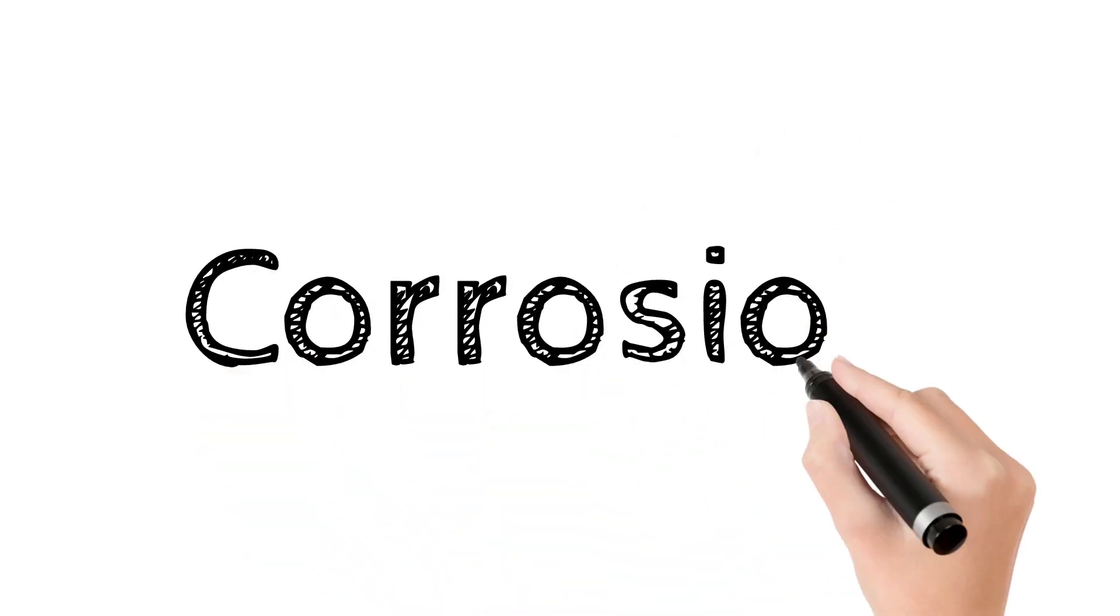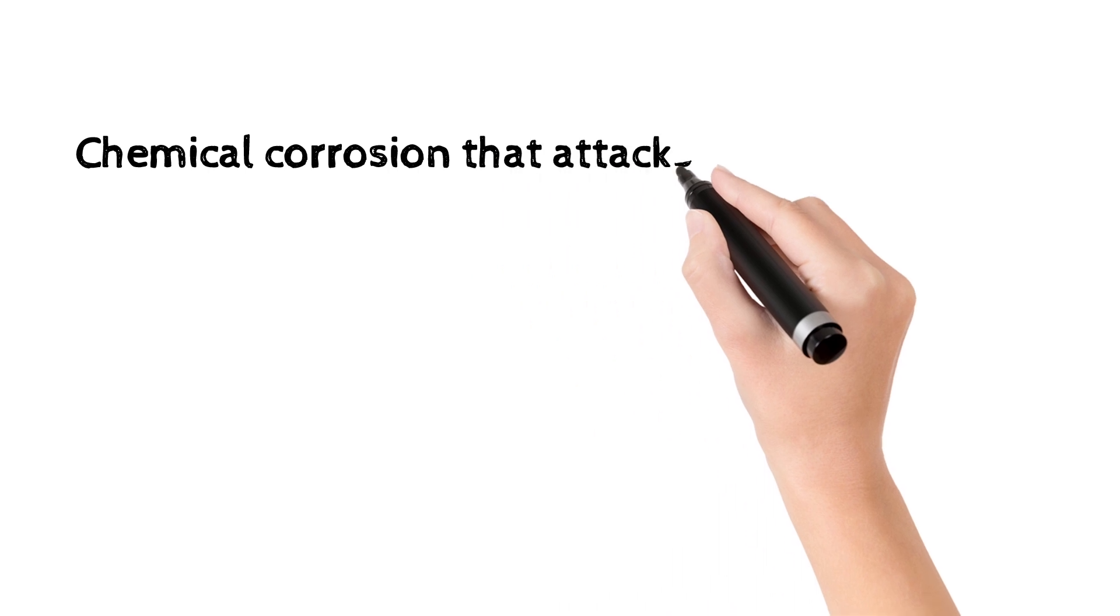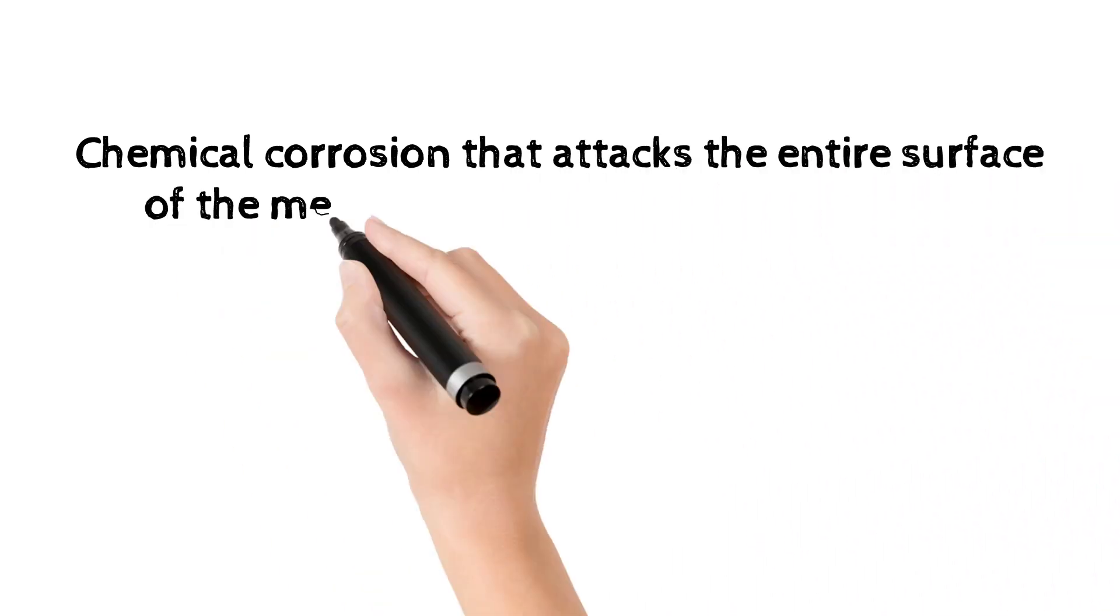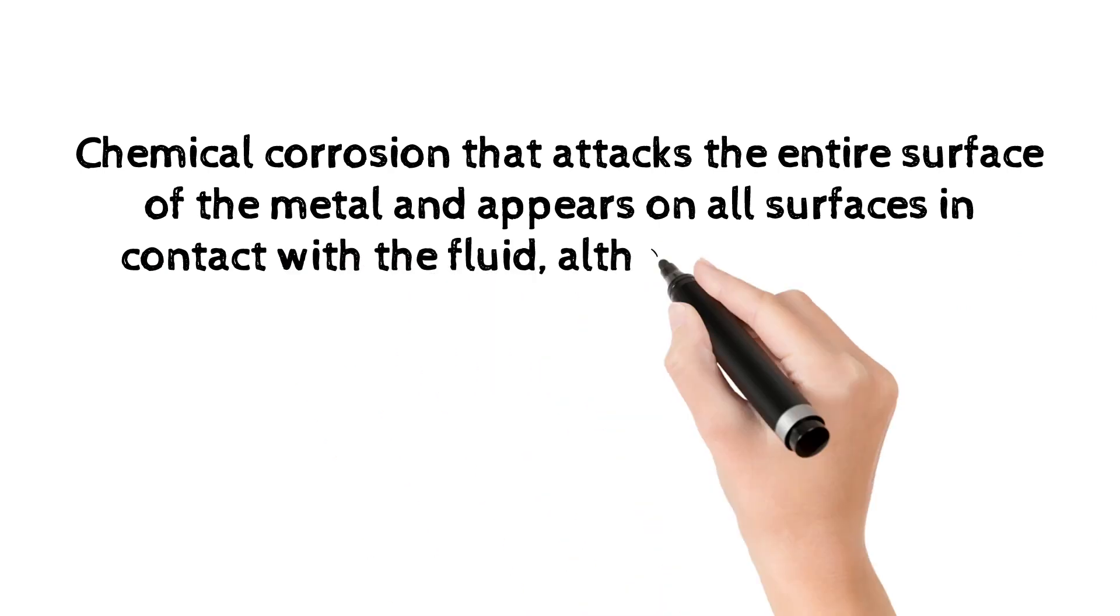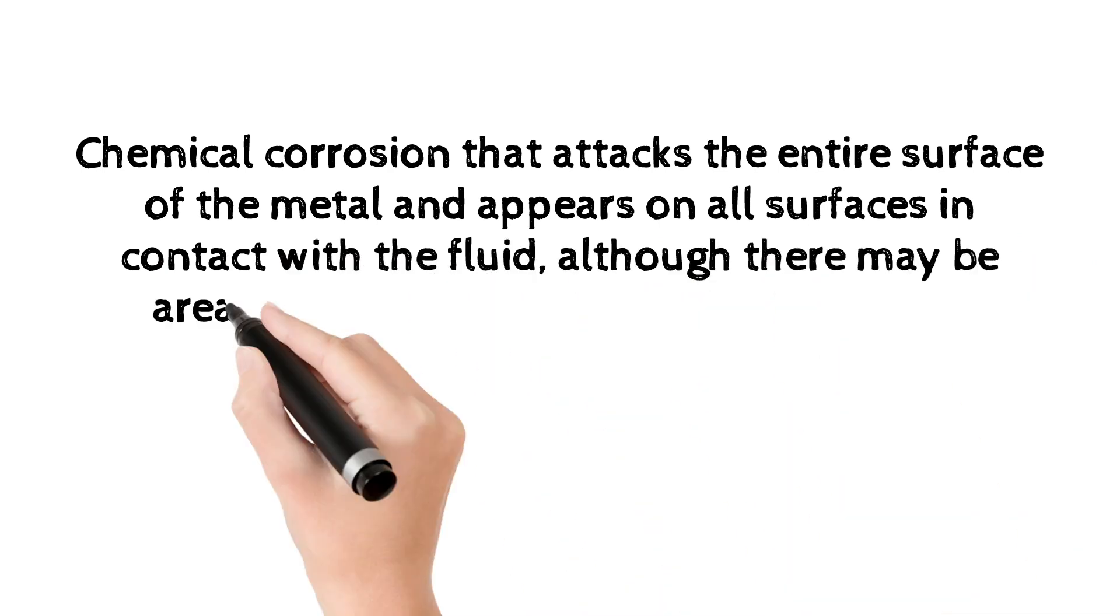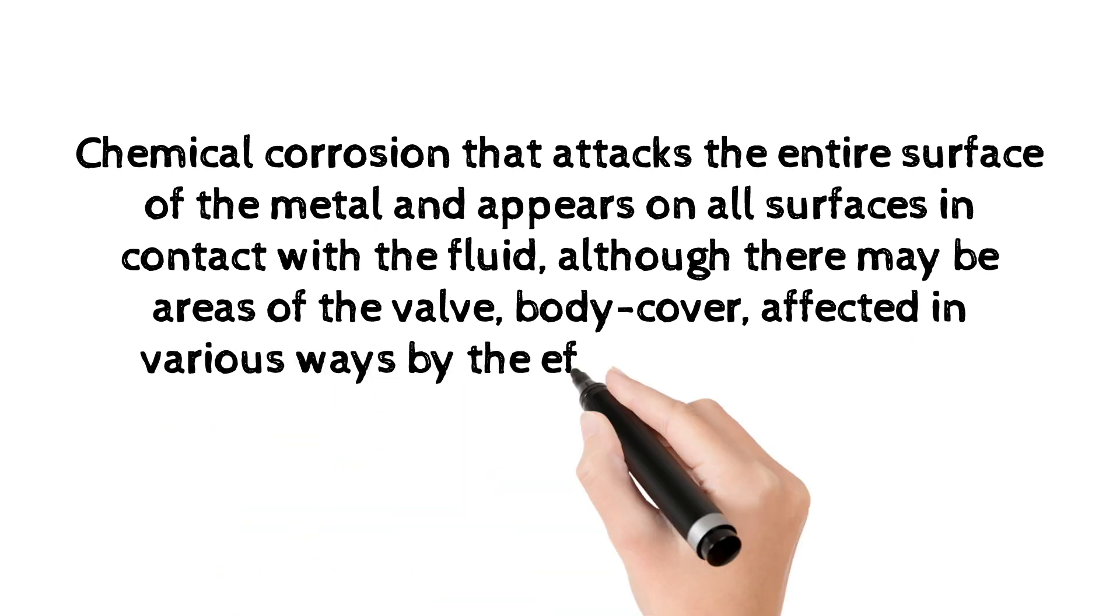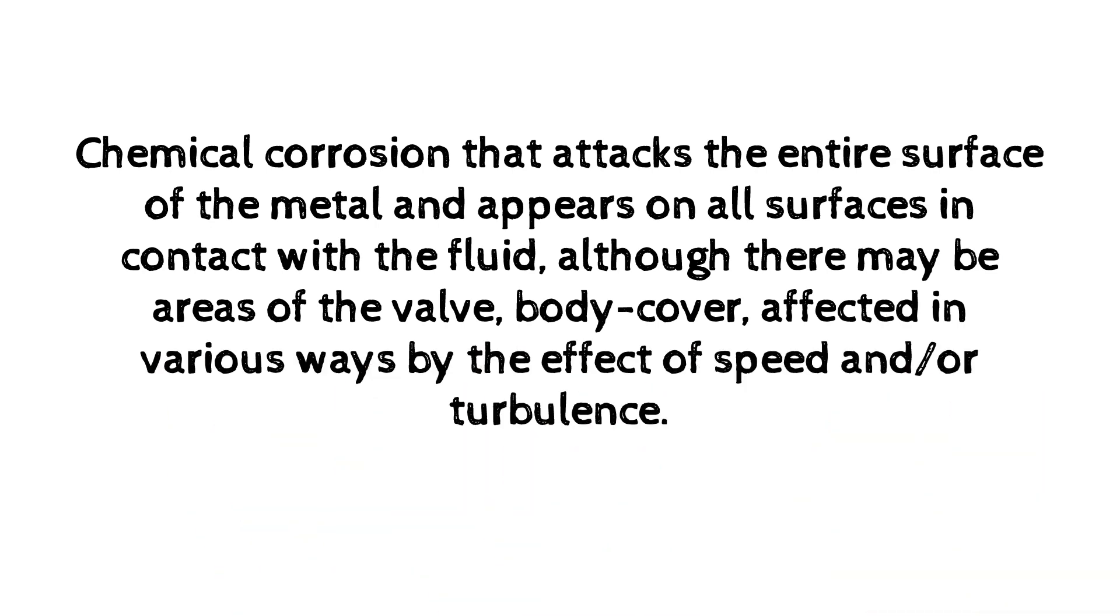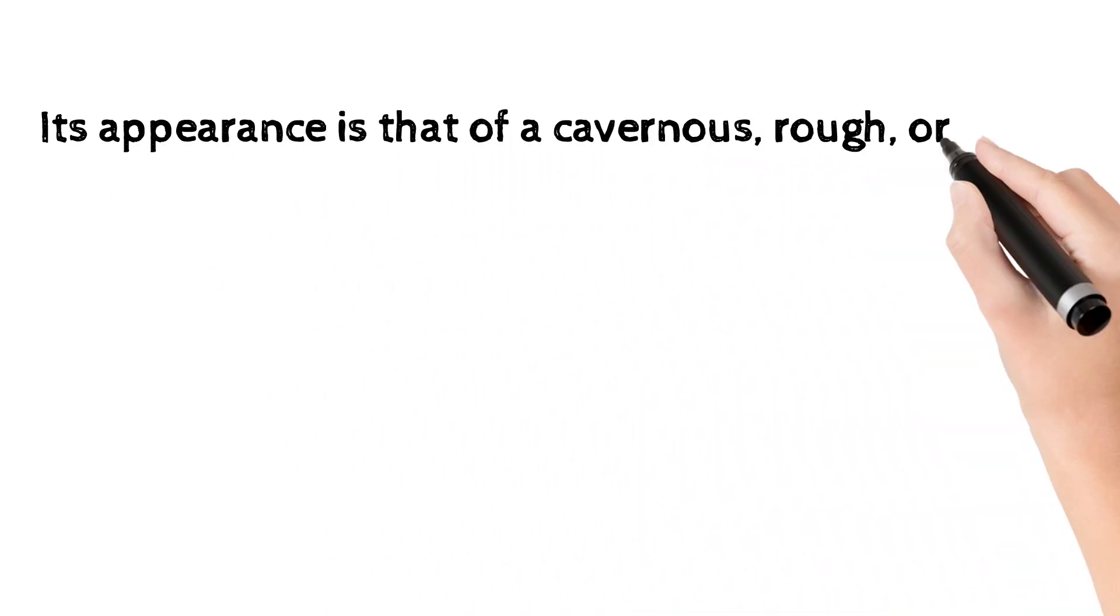Corrosion. Chemical corrosion that attacks the entire surface of the metal and appears on all surfaces in contact with the fluid, although there may be areas of the valve body cover affected in various ways by the effect of speed and or turbulence. Its appearance is that of a cavernous, rough, or pitted surface.